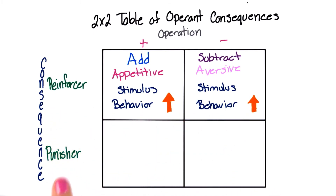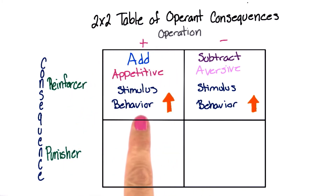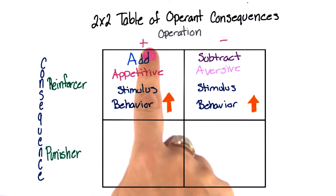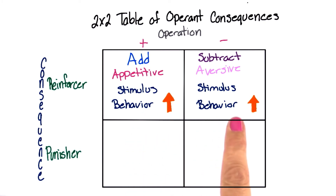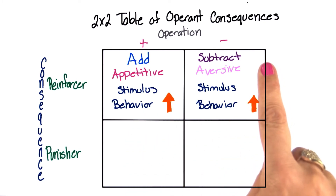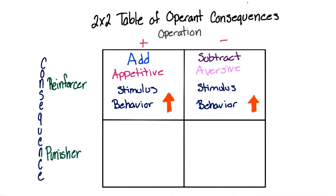Let's look at punishers. In this box, we would call this positive reinforcement because we're adding something to the environment. In this box, we call it negative reinforcement because we're taking something away.